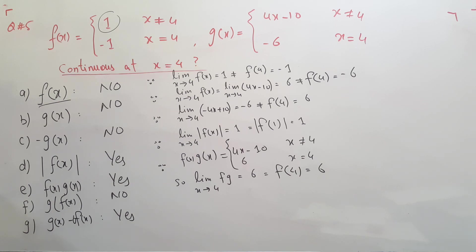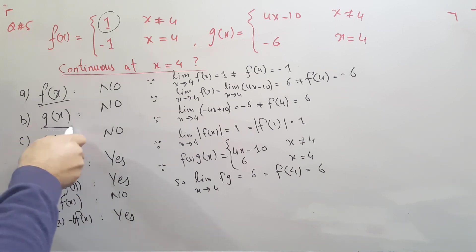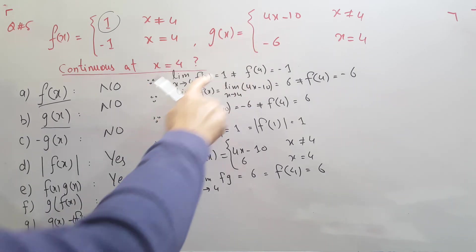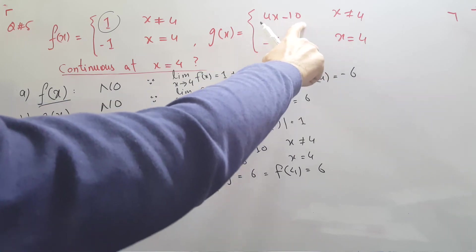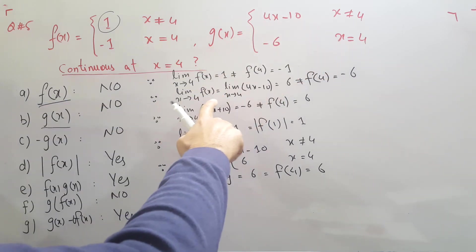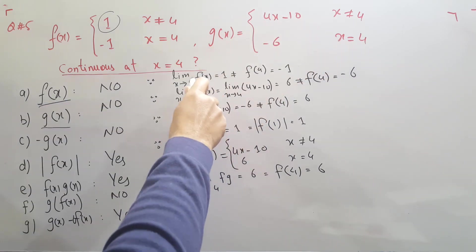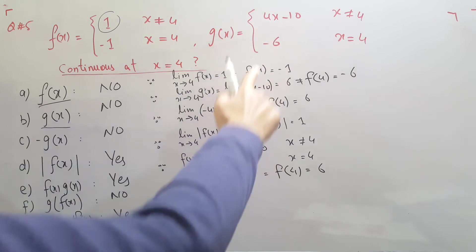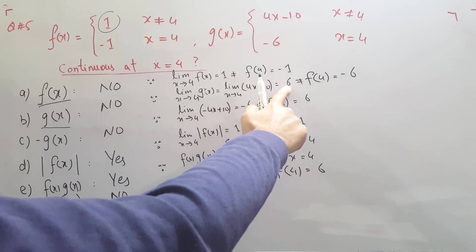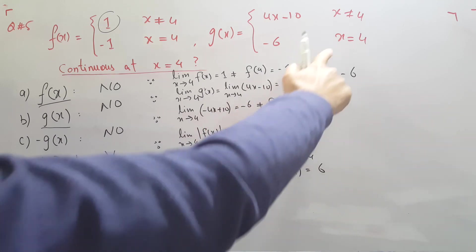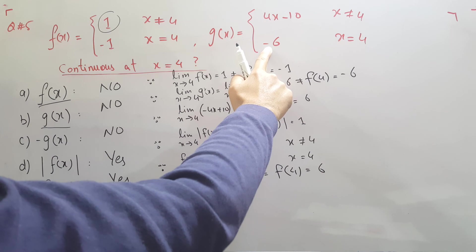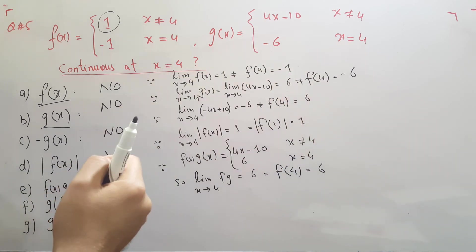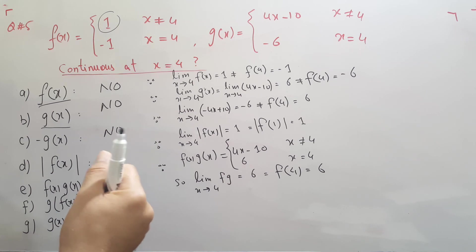Now checking whether g(x) is continuous at x = 4. Applying the limiting value to g(x) as x approaches 4 gives 6, but the function is defined at x = 4 with a value of −6. Since 6 and −6 are not equal, the function g(x) is not continuous at x = 4.